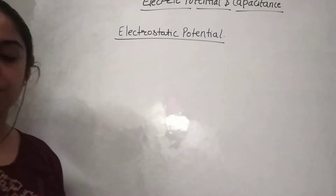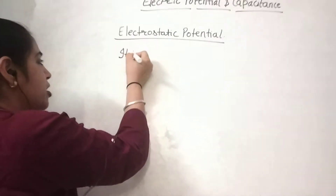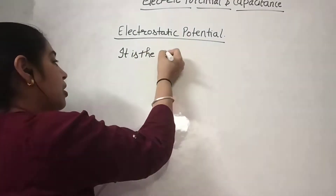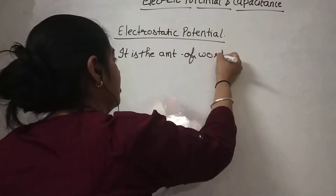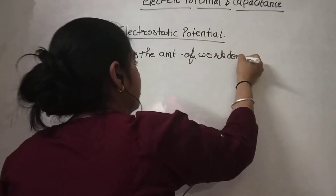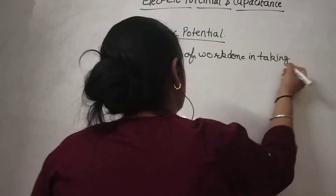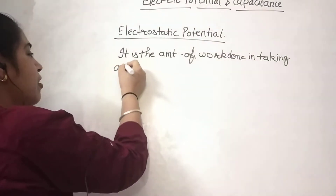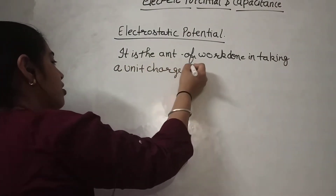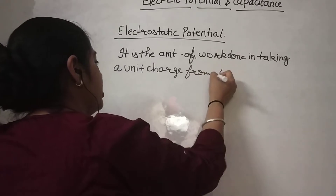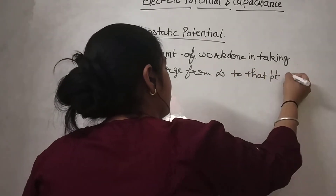So electrostatic potential — the notes have been sent to you. It is the amount of work done in taking a unit charge from infinity to that point without acceleration.